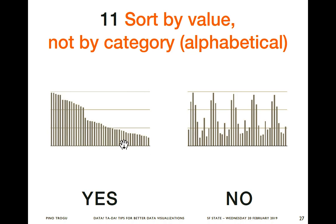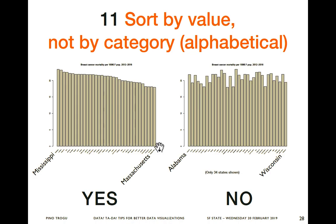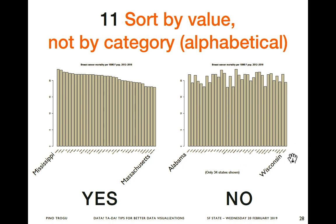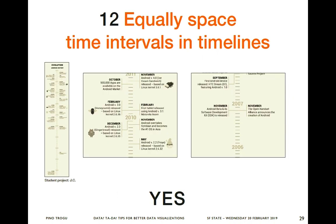Sort by value, not by category. This looks more useful because you can immediately see what's the highest, what's the lowest, maybe what's in the middle. This example is about breast cancer mortality in the United States — mortality per 100,000 female population in 2012 and 2016. If you sort the data, you can immediately see that Mississippi has the highest rate of mortality and Massachusetts has the lowest. But if you leave it alphabetical, it's much harder to read.